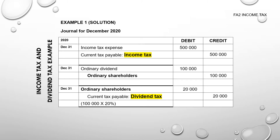When it comes to the dividend that has been declared — ordinary dividends of R100,000 — this is a distribution of retained earnings, so we debit the ordinary dividends account. At the same time we raise a liability towards our shareholders, so we credit ordinary shareholders R100,000. However, we must not forget that we are not going to pay R100,000 to our shareholders because we have to withhold the tax. We are only going to pay R80,000 to our shareholders; the other R20,000, which represents the dividends tax, will be paid over to the revenue service.